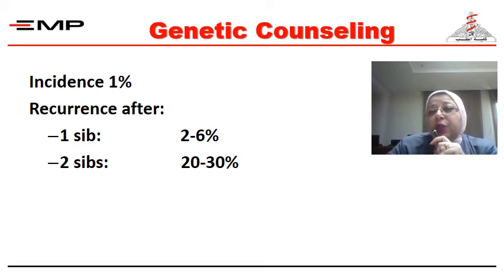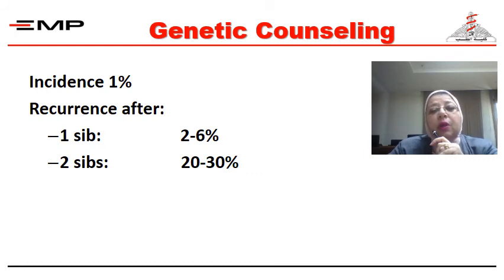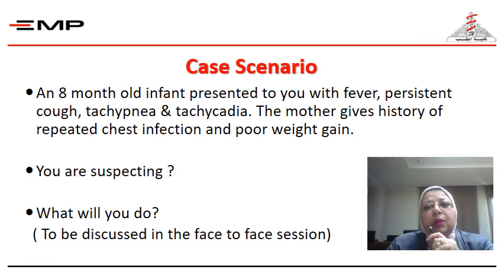When parents come for genetic counseling and ask what is their chance of having a baby with congenital heart, in general we say it is 1%. But if they have one child with congenital heart, we say it is 2-6%. If they have two siblings with congenital heart, the chance in the third child is 20-30%, which is nearly one-third of offspring.